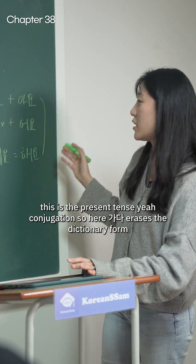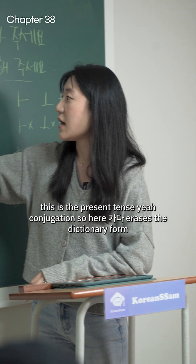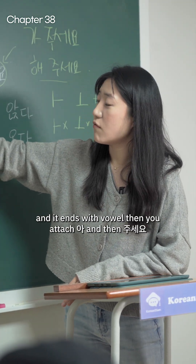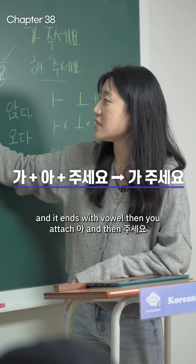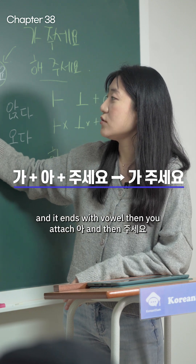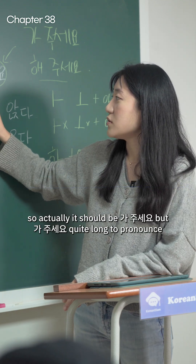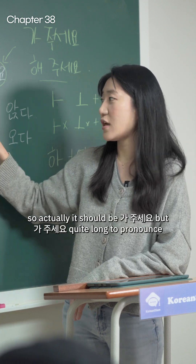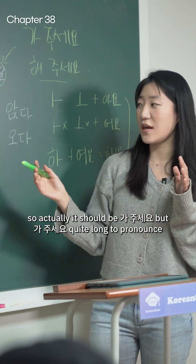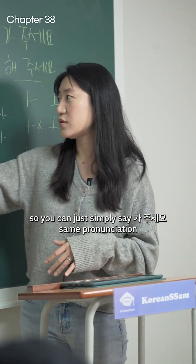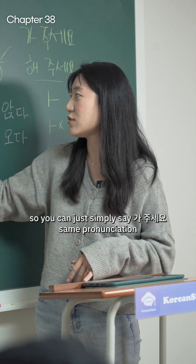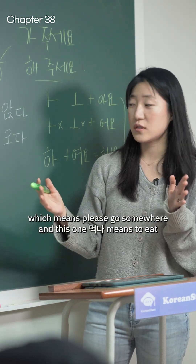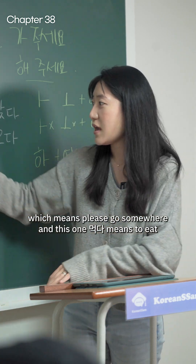This is the conjugation. So for 가다 — erase the dictionary form 다. It ends with a vowel, so you attach 아, then 주세요. It should be 가아 주세요, but since it's quite long to pronounce, you simply say 가 주세요. Same pronunciation — meaning please go somewhere.